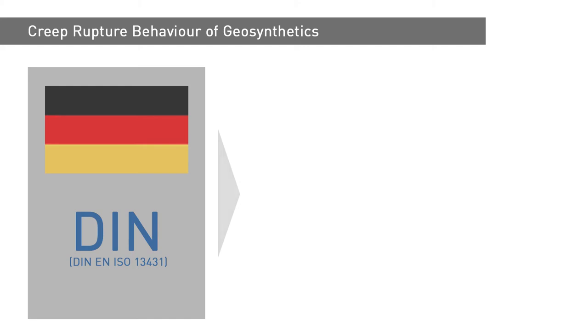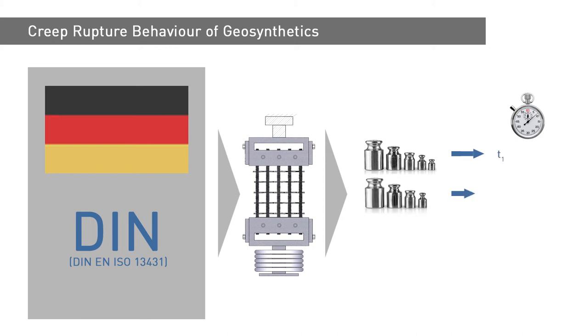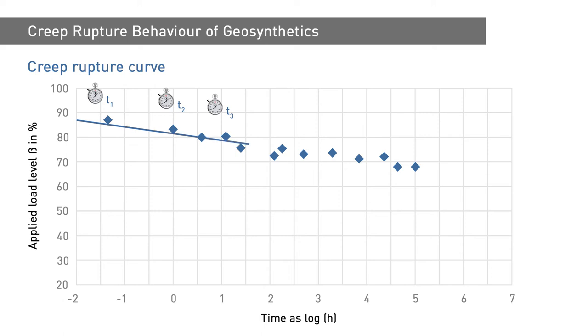The creep rupture behaviour of geosynthetics can be tested to DIN ISO 13431-1. This involves subjecting the geosynthetic product to a series of different load levels by measuring the time it takes to rupture. The applied load levels correspond to a percentage of the product's short-term strength. The determined times to creep rupture are plotted against the applied load levels in a graph. A semi-logarithmic plot for a high tensile Husker polyester geogrid shows a linear trend that can be extrapolated over the projected design life by inserting a best-fit line.